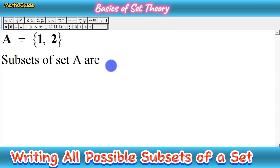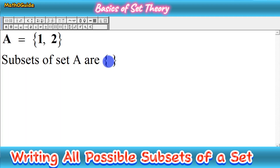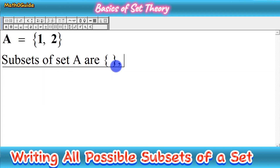In every type of question where you have to write subsets of a set, the first subset is always the empty set. The empty set is a set that has no elements, and it is a subset of all sets. So in all parts of the question, whenever you have to find subsets, the empty set is always the first subset.